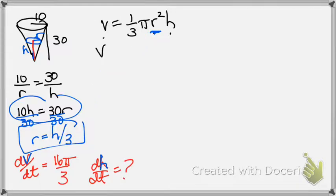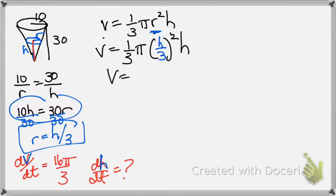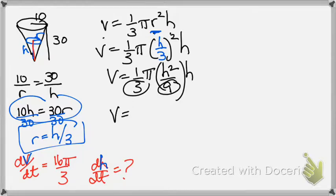So volume equals 1/3 πr²h, but I'm going to change r into h/3. Simplify this completely. Okay, so we have 1/3 π h² over 9 times h. And now just move all your numbers to the front. You have a 3 times a 9, both on the bottom. So that's 1/27 πh³.